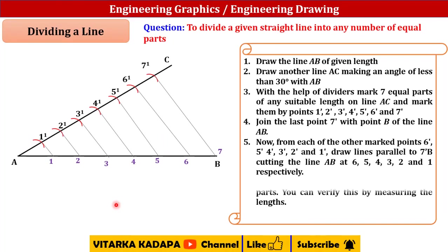Now the line has been divided into 7 equal parts. You can also verify the length. For example, if the line length is 70 mm, you will get exactly 10 mm each part from A to 1, from 1 to 2, and so on.